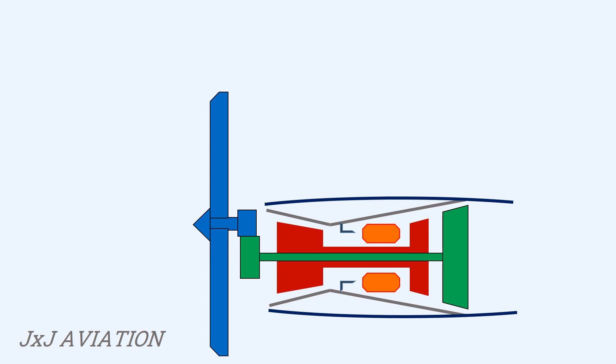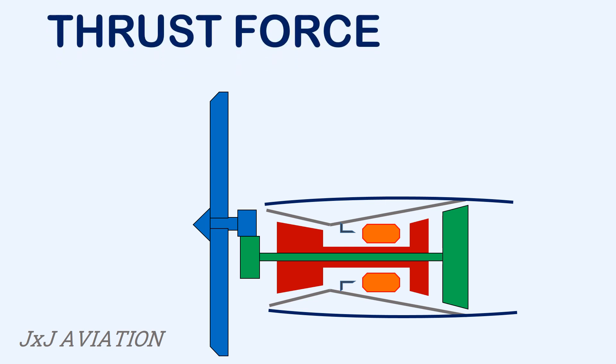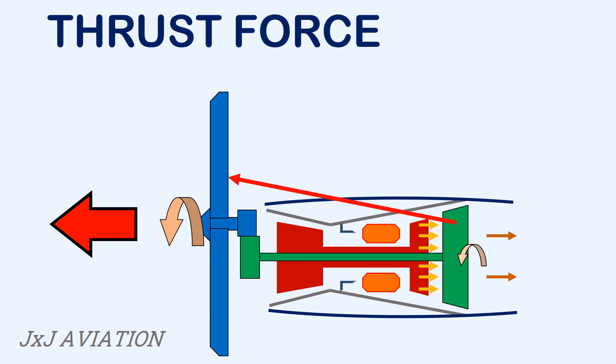Now let's see how the thrust force is created on this engine. As the drive turbine rotates, it extracts most of the energy from the high pressure gases, so very little thrust is created at the exhaust. The drive turbine rotates the propeller which creates most of the thrust force on this aircraft. Approximately 80% of the total thrust is created by the propellers and 20% of the total thrust is created by the exhaust gases.